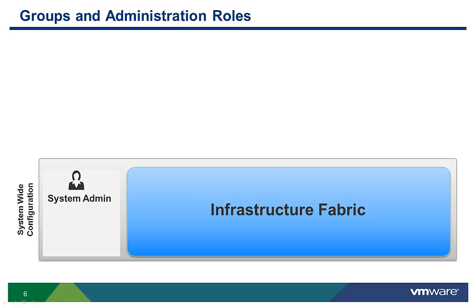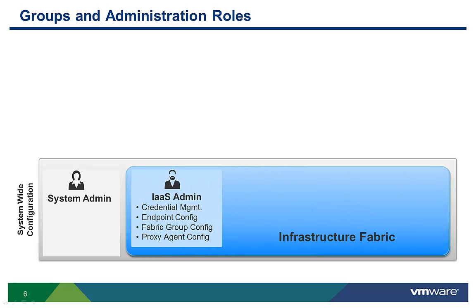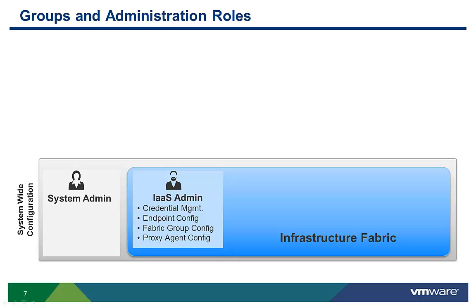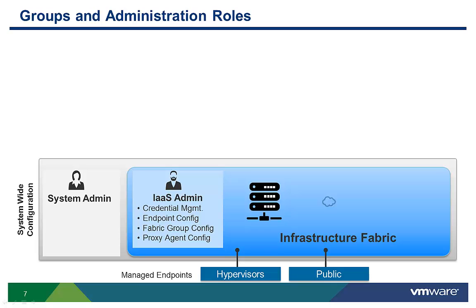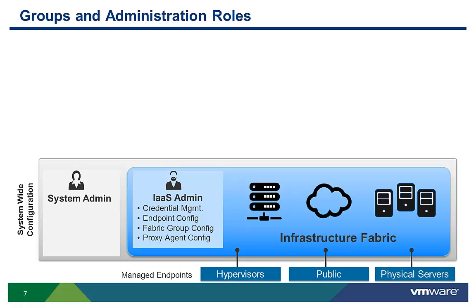The system admin also designates who is going to manage the infrastructure fabric. The infrastructure, or IaaS admin, is the person who manages the discovery and organization of compute, networking, and storage resources. The infrastructure administrator defines the managed endpoints required to interact with and discover resources available in the virtual, physical, and public cloud environments managed by vCloud Automation Center.